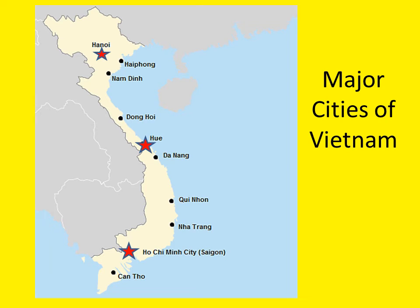This map shows some of the major cities of Vietnam that we'll be discussing during the semester, with stars placed by three cities referenced many times in the course. Hanoi, to the north, was the capital of North Vietnam and is the current capital of the unified nation of Vietnam; today it has approximately six and a half million people in its metropolitan area. In the middle of the map is Hue, which was the capital during the Nguyen dynasty from 1802 to 1945. To the south is Ho Chi Minh City, formerly known as Saigon, which is the largest city in Vietnam with a metropolitan area approaching 10 million people. This brings to a close our brief look at the geography of Vietnam.